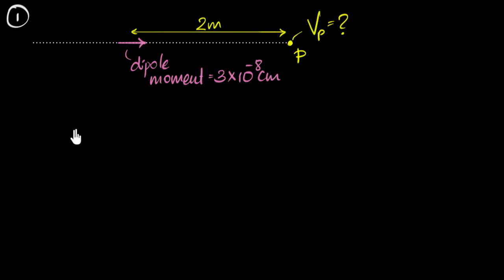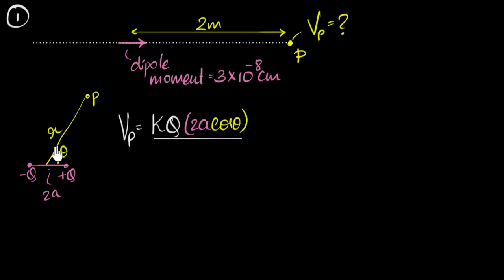So how do we do this? Well, in a previous video, we already derived what the expression for the potential due to a dipole anywhere is, so let me quickly show you that. We saw that if you have a dipole, let's say there's a negative charge, there's a positive charge, separated by some distance we used to call 2a. And if you want to know what the potential at some point P at a distance r from the center, center of the dipole, then we saw that that expression is gonna be kq into 2a cos theta, where theta is this angle, theta, divided by r squared.